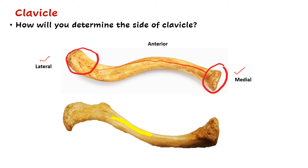The shaft is curved, and the medial two-thirds of the shaft is convex anteriorly and concave posteriorly. So you know which part has to be directed anteriorly - the medial two-thirds, which is convex anteriorly, should be placed facing forward.